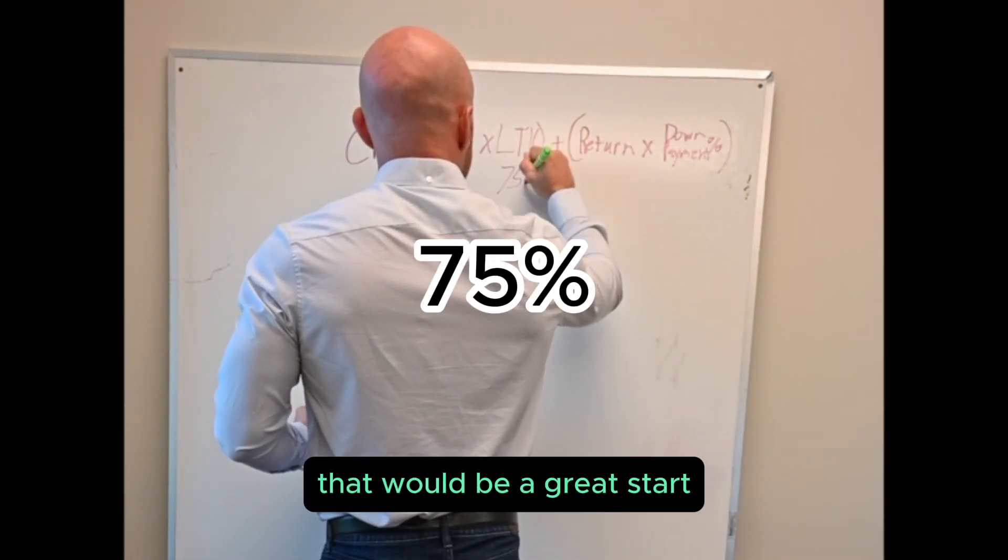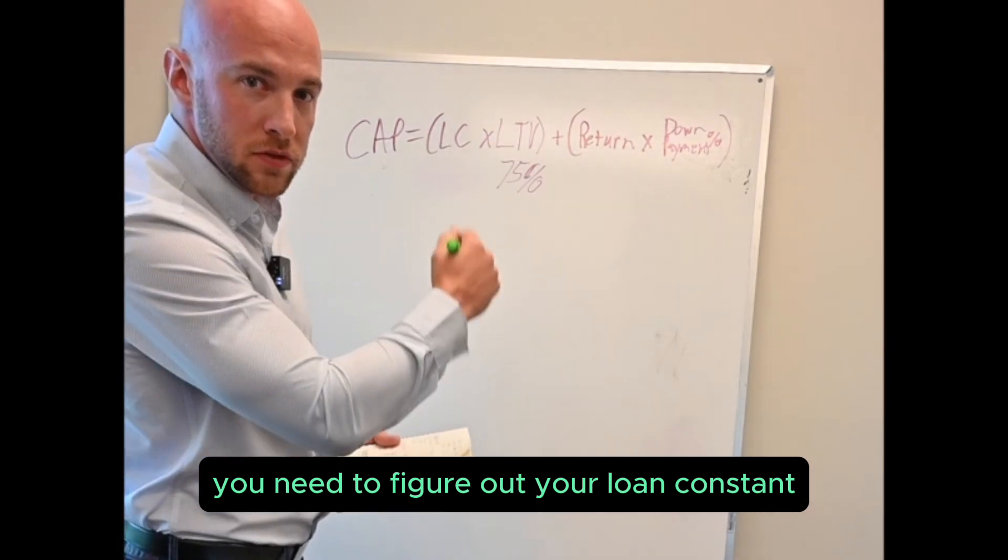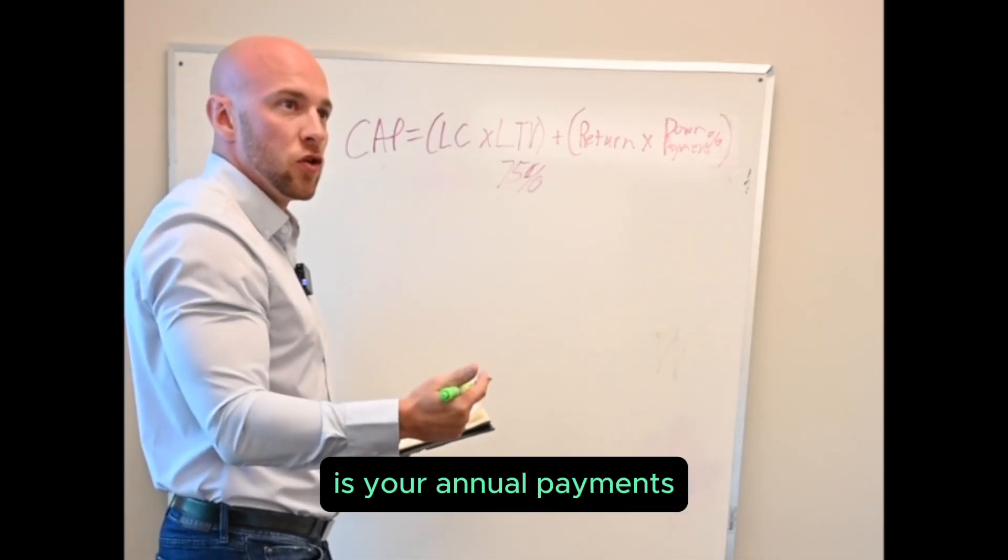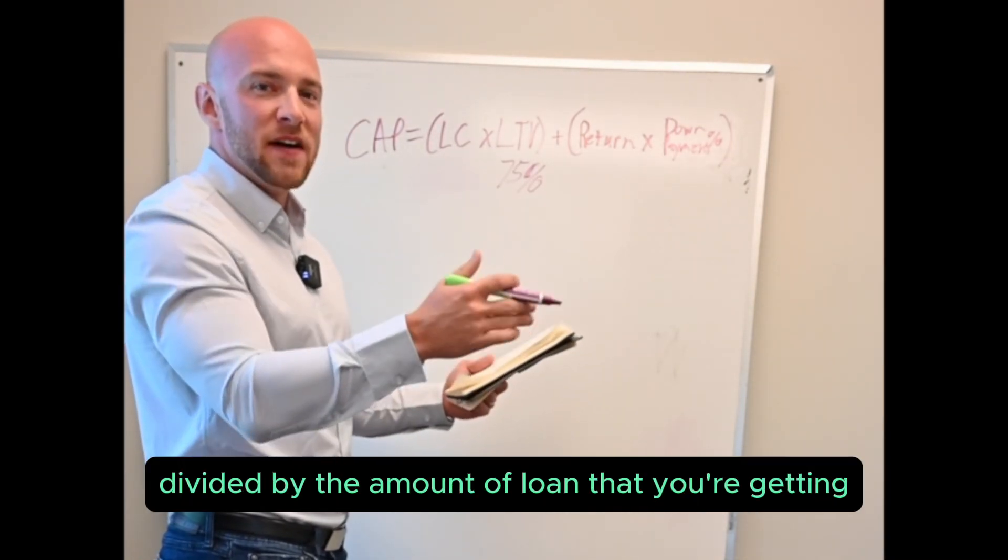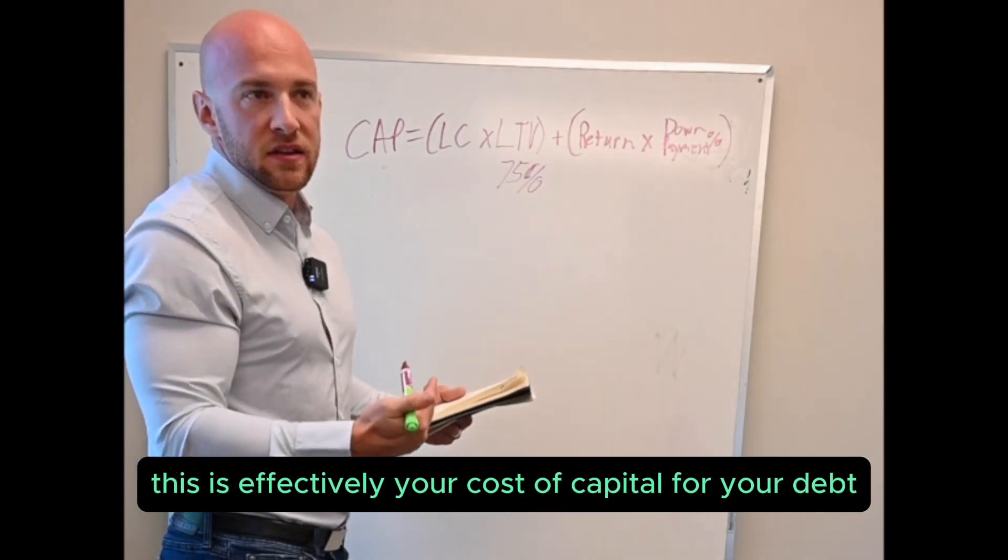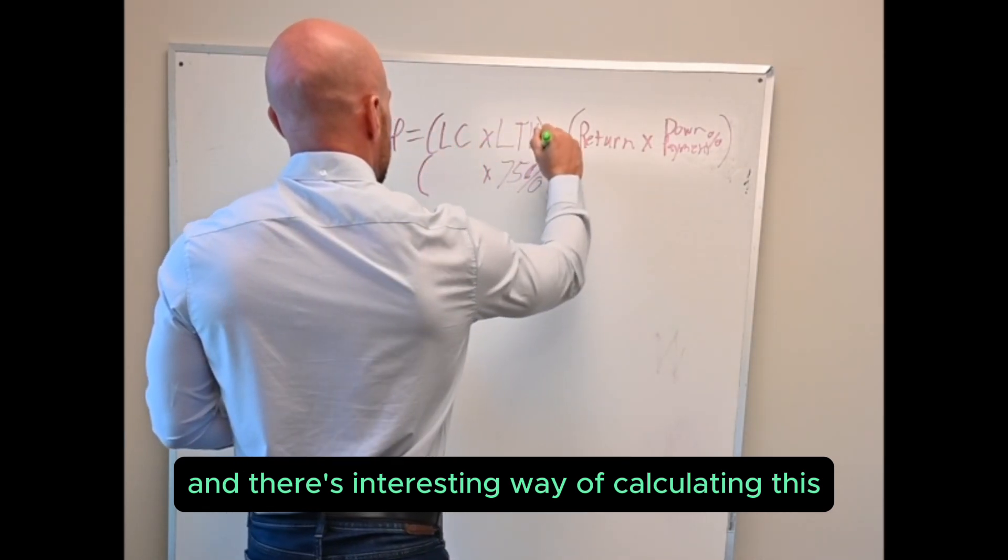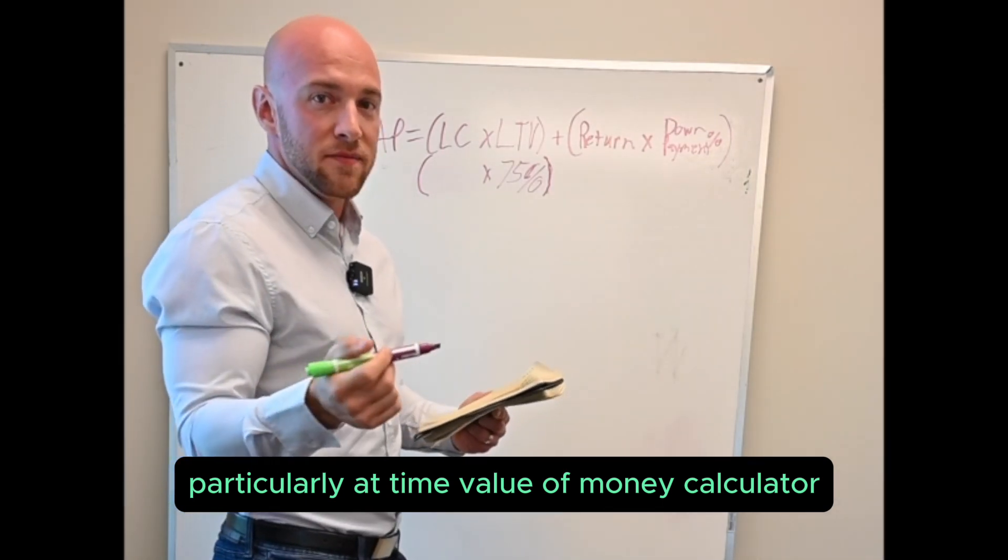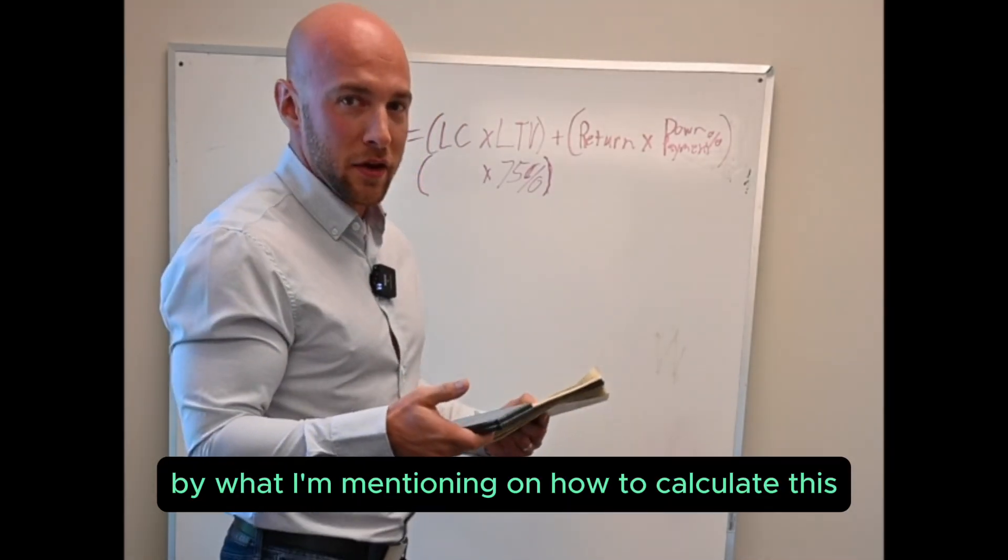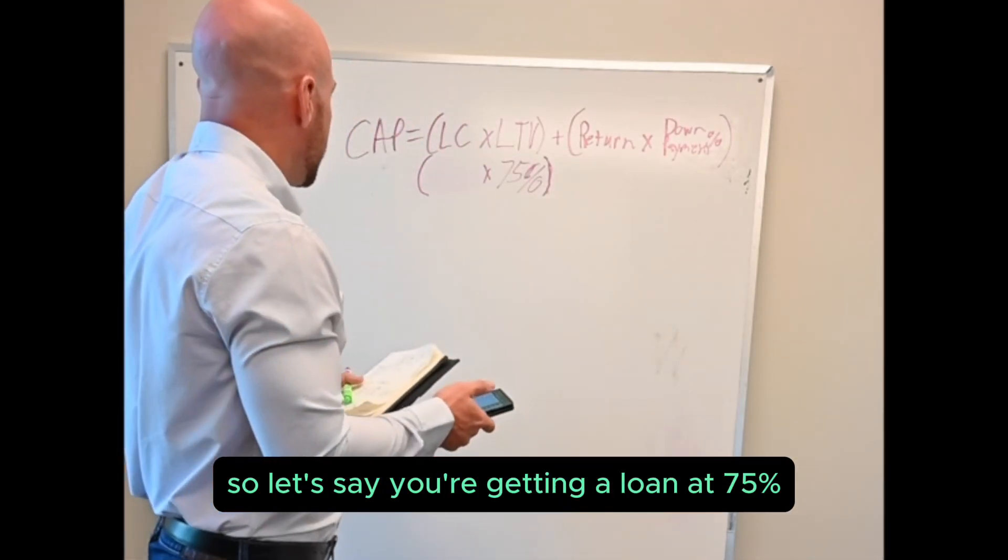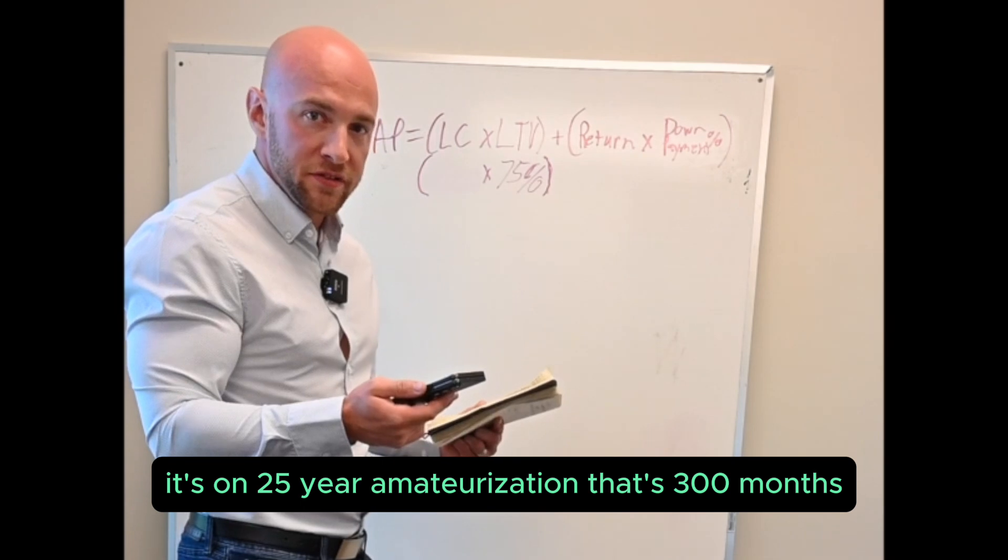That would be a great start for most investment properties. Next for your debt side you need to figure out your loan constant. Your loan constant is basically what is your annual payments. You take all your monthly payments for 12 months, add them up, your annual payment divided by the amount of loan that you're getting. This is effectively your cost of capital for your debt. There's an interesting way of calculating this. I need a calculator to calculate it, particularly a time value of money calculator, TVM calculator. So I'm going to pull up mine. Let's say you're getting a loan at 75 percent loan to value, it's on 25 year amortization, that's 300 months.